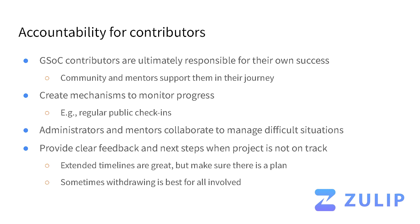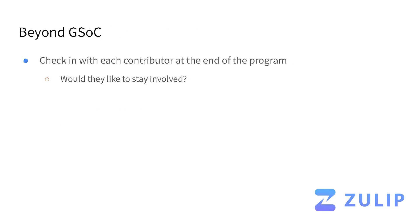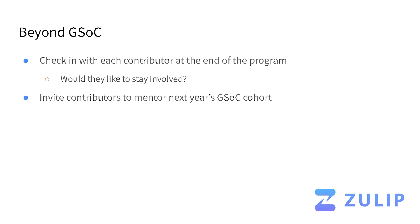We just expect clear communication in both directions. Towards the end of the program, we really like to check in with each contributor and ask how they would like to stay involved with the project. Sometimes they want to focus on finishing their existing PR; sometimes they're looking for a next project to work on. In some cases they might not be available or busy with other things, but we still love to invite contributors to mentor next year's GSoC cohort. That works great even if they haven't been actively involved for a few months, and it's a great way for them to stay involved and mentor the next cohort of participants.